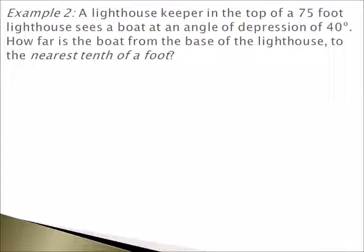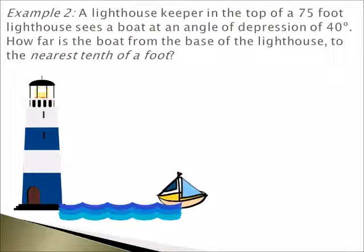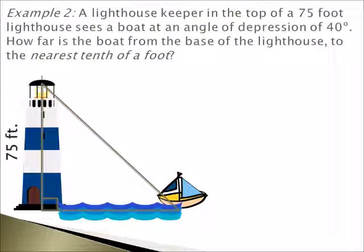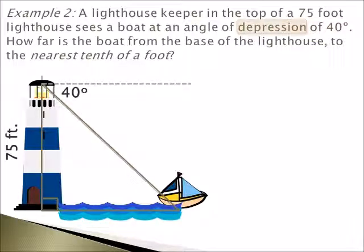Again, when you are performing your calculations in your calculator, please be sure that your mode is in degrees. Let's look at example two. A lighthouse keeper at the top of a 75-foot lighthouse sees a boat at an angle of depression of 40 degrees. How far is the boat from the base of the lighthouse to the nearest tenth of a foot? So here we have the lighthouse and here we have the boat. We are going to draw our right triangle over that and then implement our information. We know the lighthouse is 75 feet, and then we have to talk about the angle of depression. Angle of depression is where it looks down, so we are going to extend the line from the top of our triangle and the angle of depression is 40 degrees. Now based on the alternate interior angle theorem, we know that the bottom right-hand corner of our right triangle is also 40 degrees.